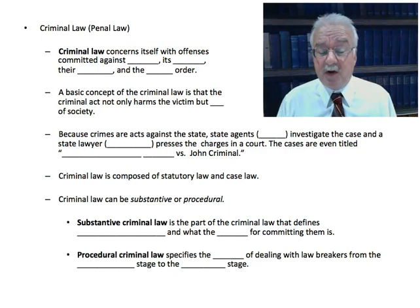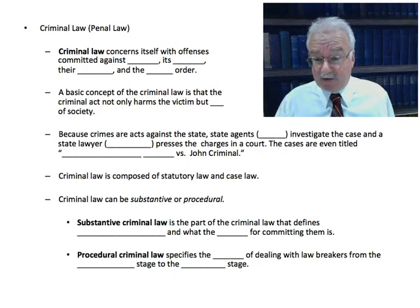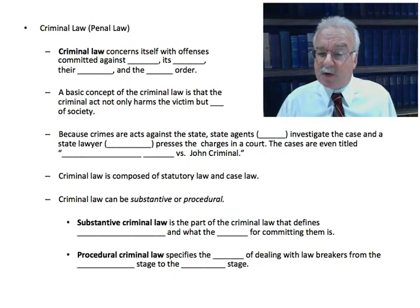Procedural criminal law specifies the procedures for dealing with lawbreakers — from the very earliest involvement of the government, namely the investigatory stage by police, all the way to the final punishment stage after conviction. For example, there are specific rules on when a police officer can stop, question, and frisk somebody. The officer must have reasonable suspicion to stop and question, and reasonable fear that the person is armed and dangerous in order to frisk. That is an example of procedural criminal law.